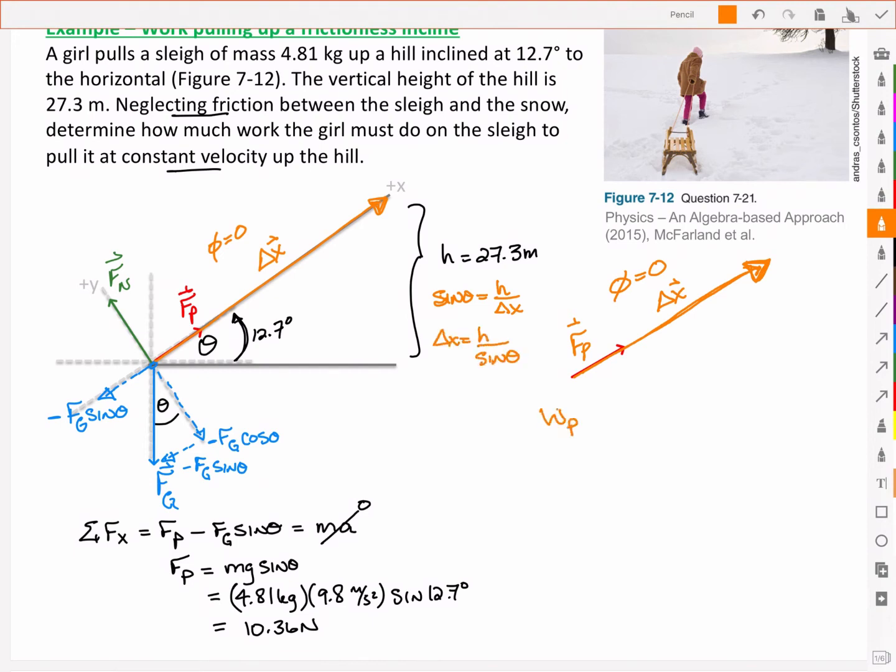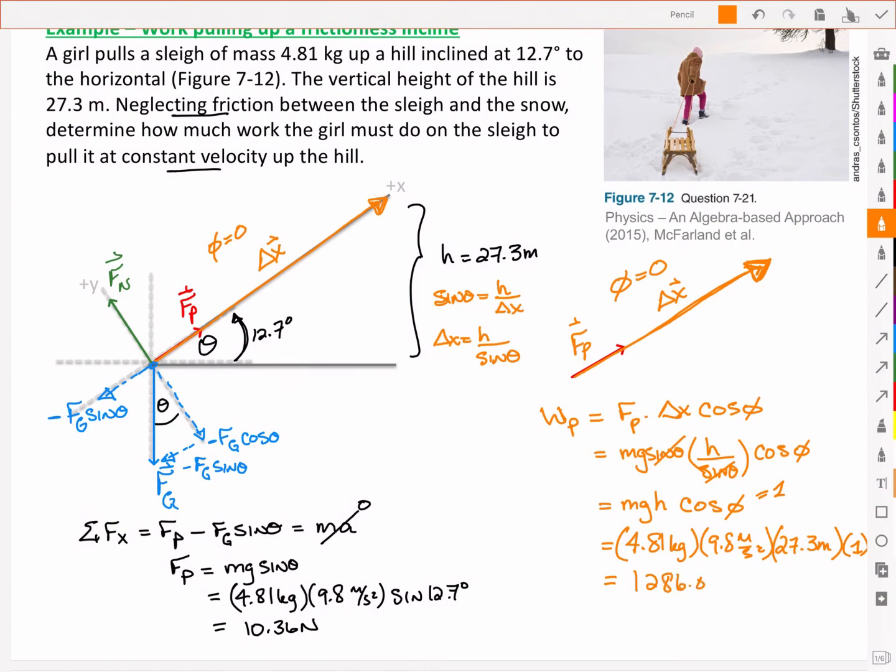Work then for the girl pulling the sleigh is going to be that force Fp times delta x times cos of phi. Thus we have Mg sin theta, H over sin theta, and cos of phi. Notice now that my sin theta will cancel, and I'm left with MgH cos phi. This cos of phi is equal to 1. I'm left with 1,286.8 joules, or 1.29 times 10 to the 3 joules, if I follow the three significant digits used in the other numbers.